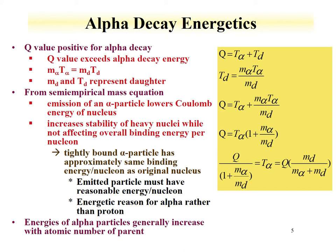From the semi-empirical mass equation for alpha decay, we know that emission of an alpha particle lowers the Coulomb energy of a nucleus. This increases the stability of heavy nuclei while not affecting the overall binding energy per nucleon, because an alpha particle is emitted — and if you remember from the figure of binding energy versus A, alpha particles have very high binding energies.